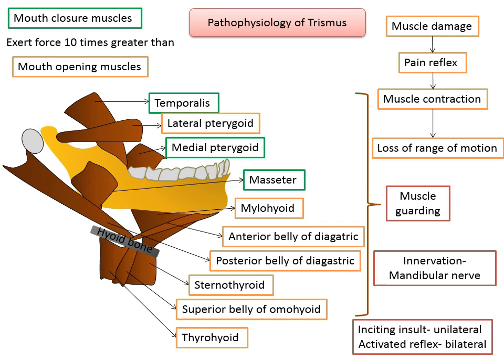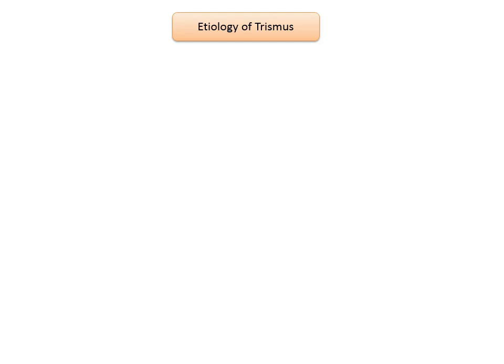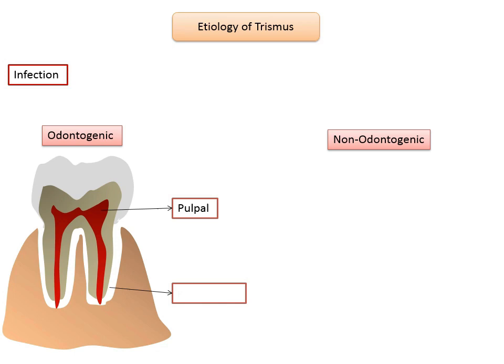Moving on to the etiology of trismus — there are myriad etiologies implicated in its development, broadly classified into intra-articular and extra-articular causes. Focusing on extra-articular factors: infections, which can be odontogenic and non-odontogenic. Odontogenic infections include pulpal, periodontal, and pericoronal infections. The presence of an oral infection, particularly around an erupting mandibular third molar, is the most common cause of trismus. Several odontogenic infections involving the muscles of mastication are often accompanied by trismus at initial presentation.